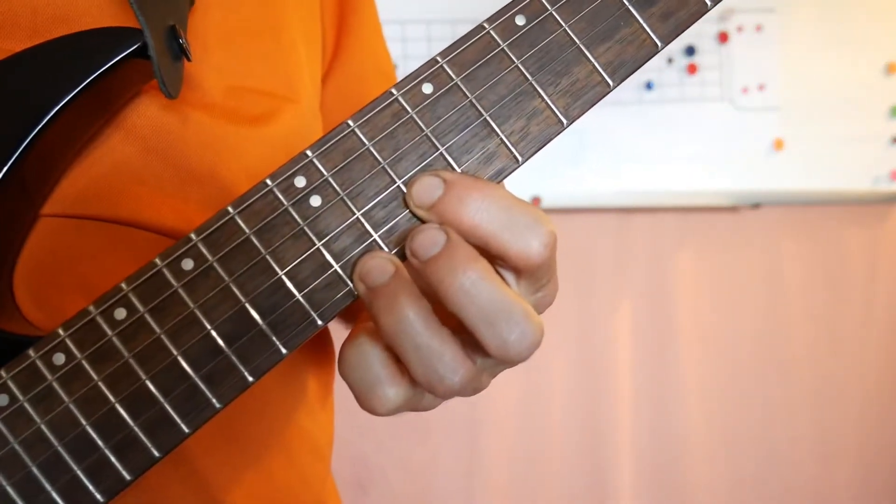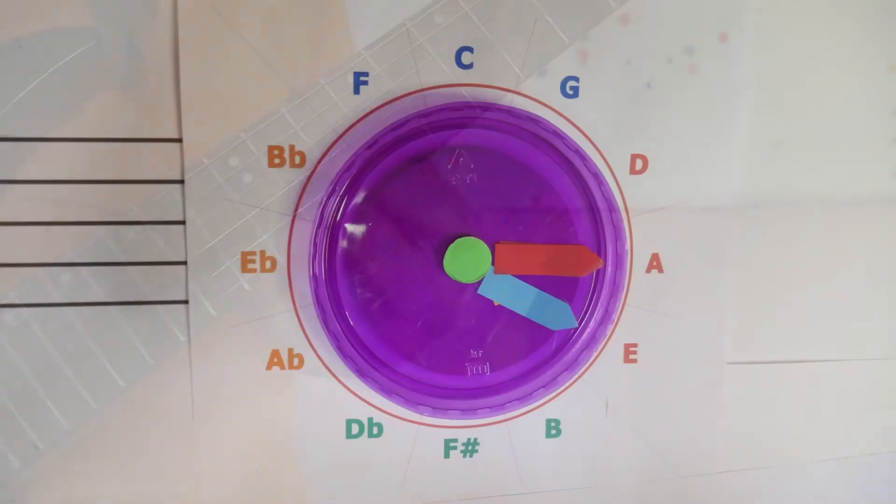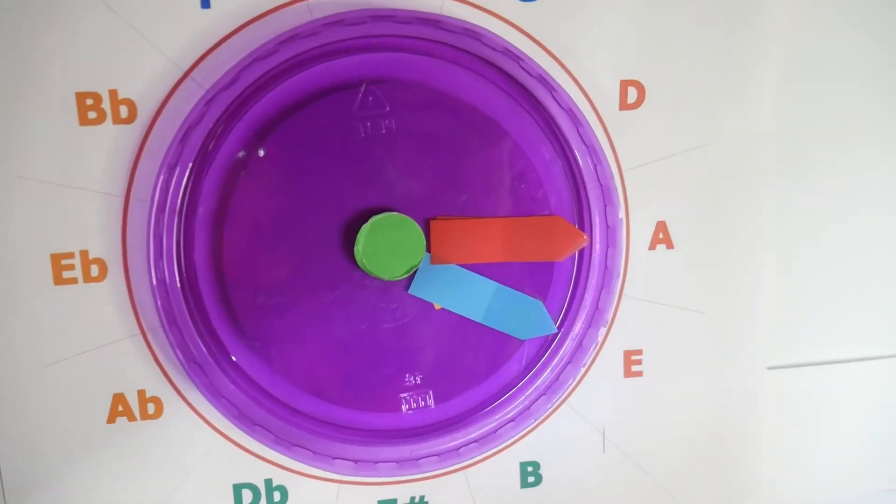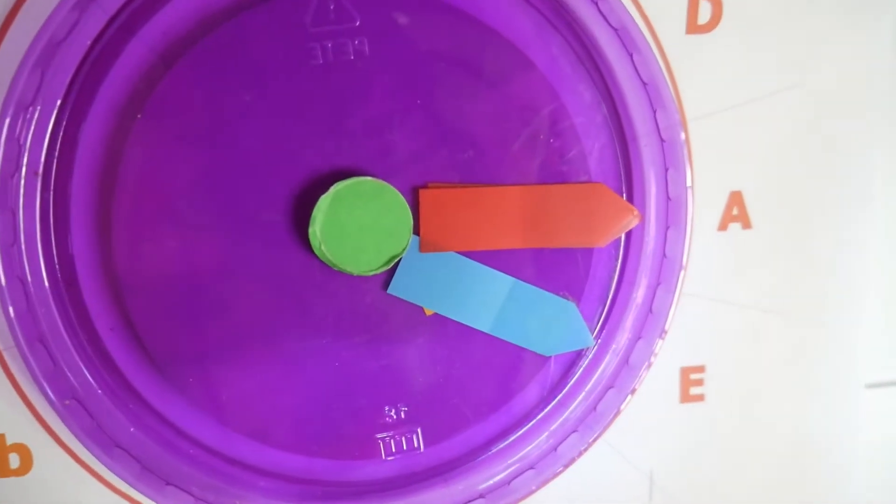And the secret: the circle of fifths is like the secret decoder ring for power chords. It just gives you the answer. It's like a cheat sheet.